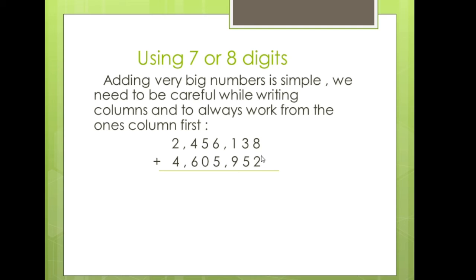Whenever we have to add them, we take start from the right side. So eight plus two will become ten, so I will put zero here and one will come over here in this column — which we normally call the carry. So one plus three will become four, and four plus five will become nine.